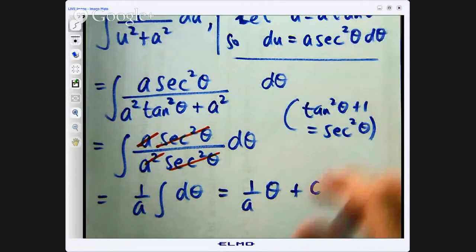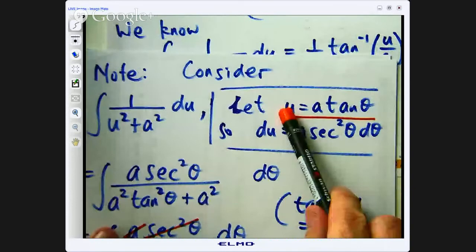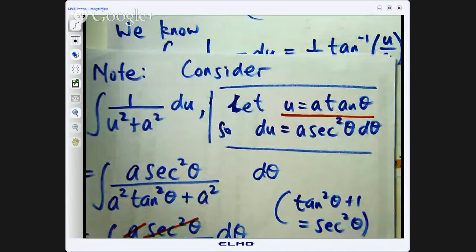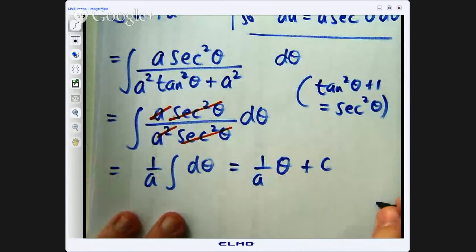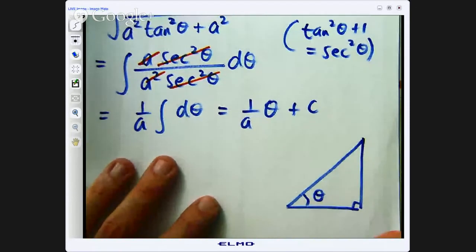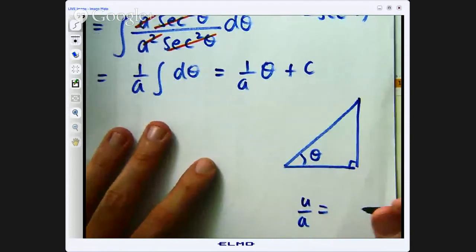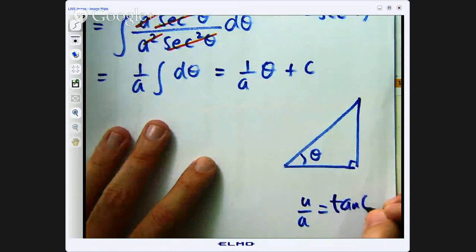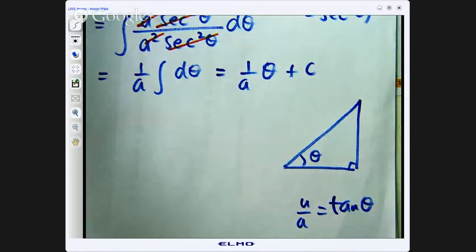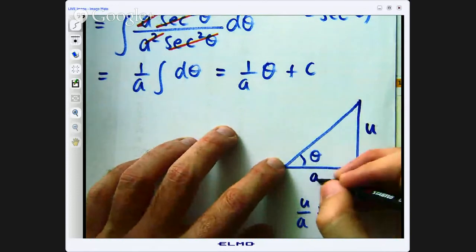How am I going to get this θ. Well let's go back to our original substitution. u equals a tan θ. So tan θ equals u on a. So I am going to draw a little right angle triangle and try to get this θ. Let's just call this angle θ. It doesn't matter which one you do. So u on a equals tan θ. All right. So tan is opposite over adjacent. So that is the opposite side, that will be u. And that will be the adjacent side a.